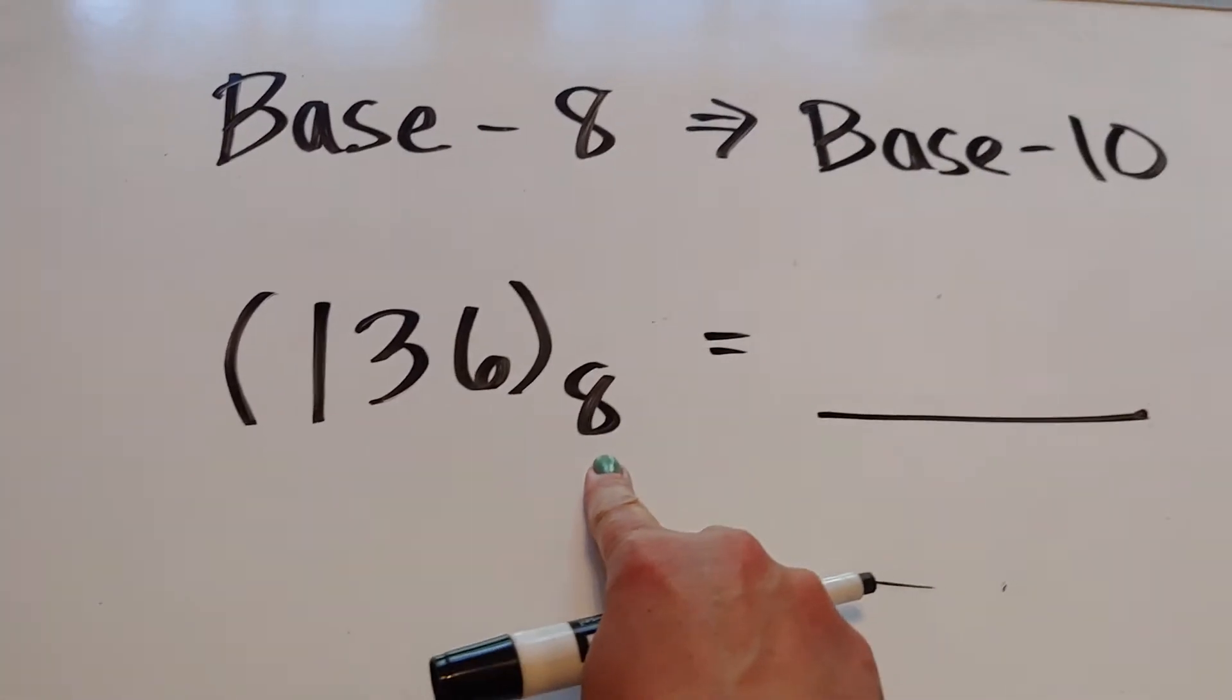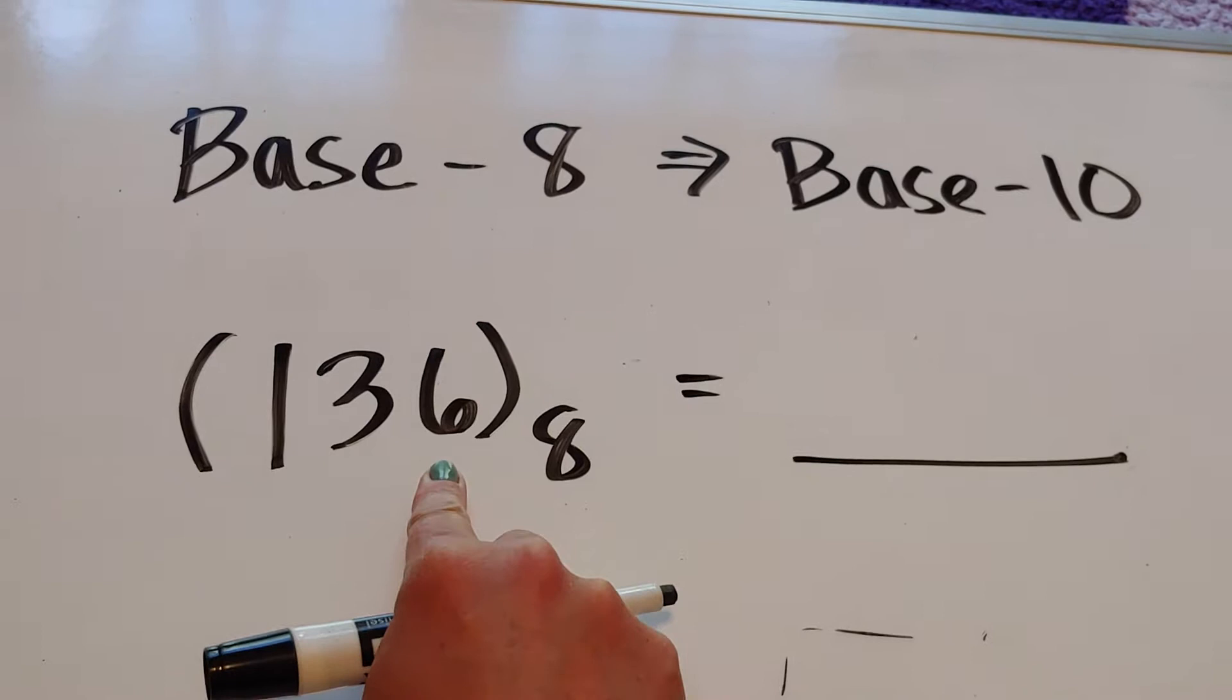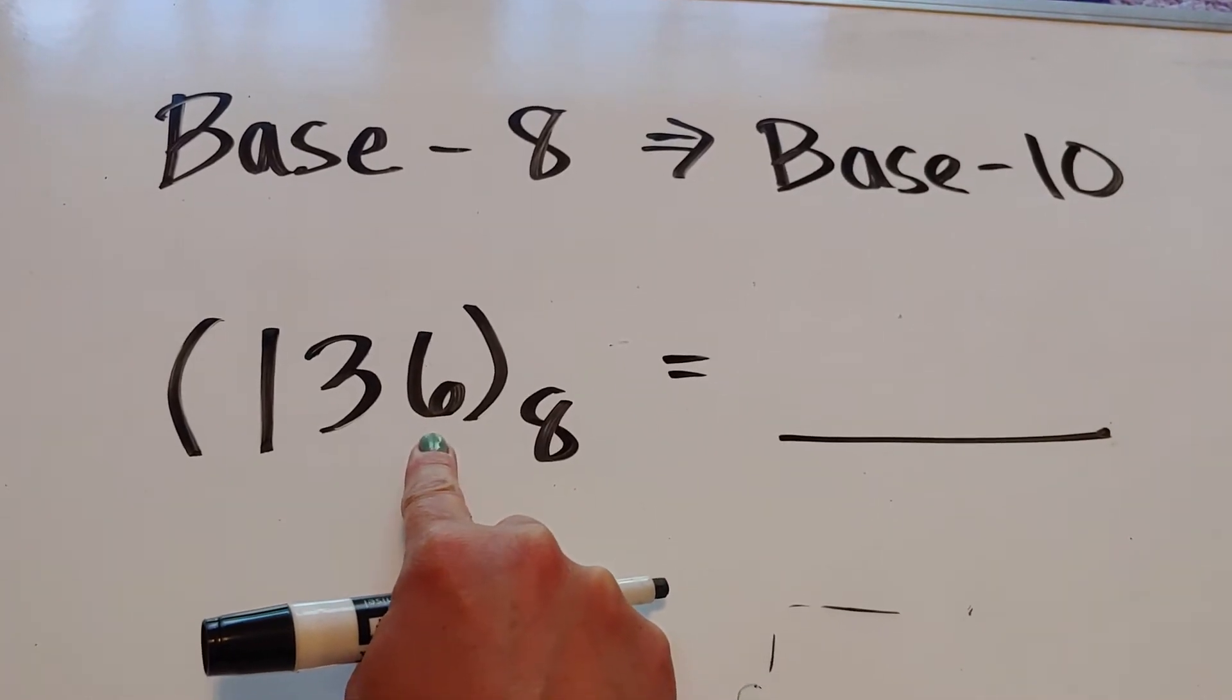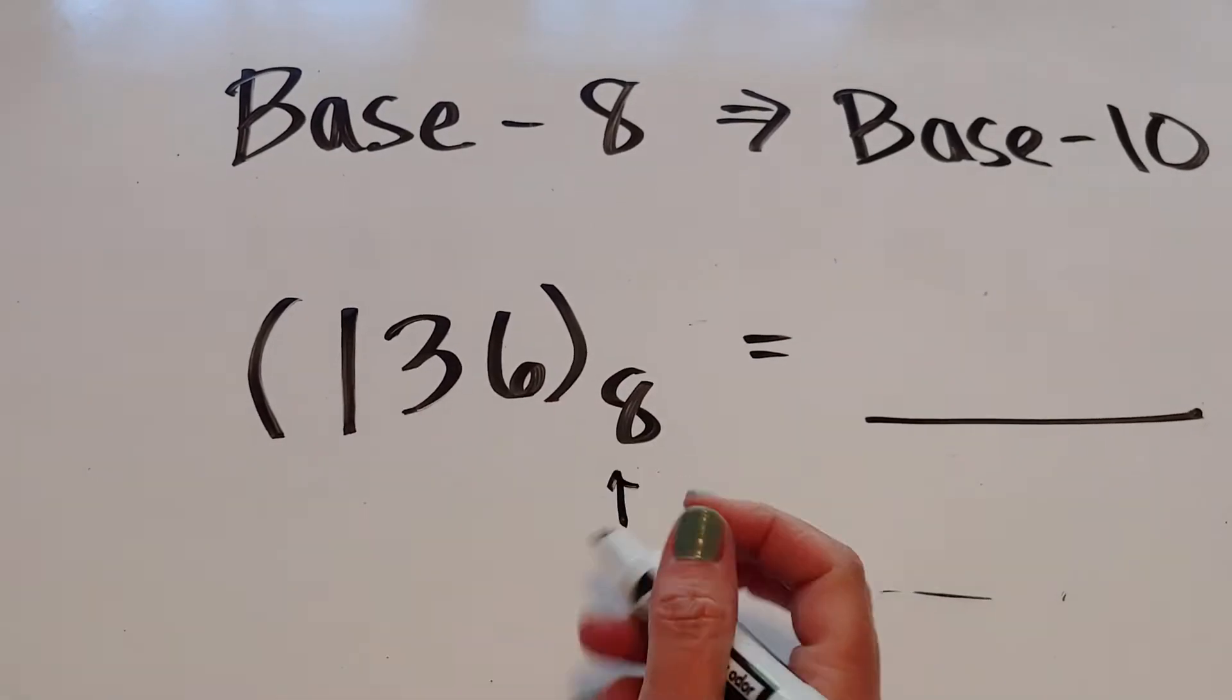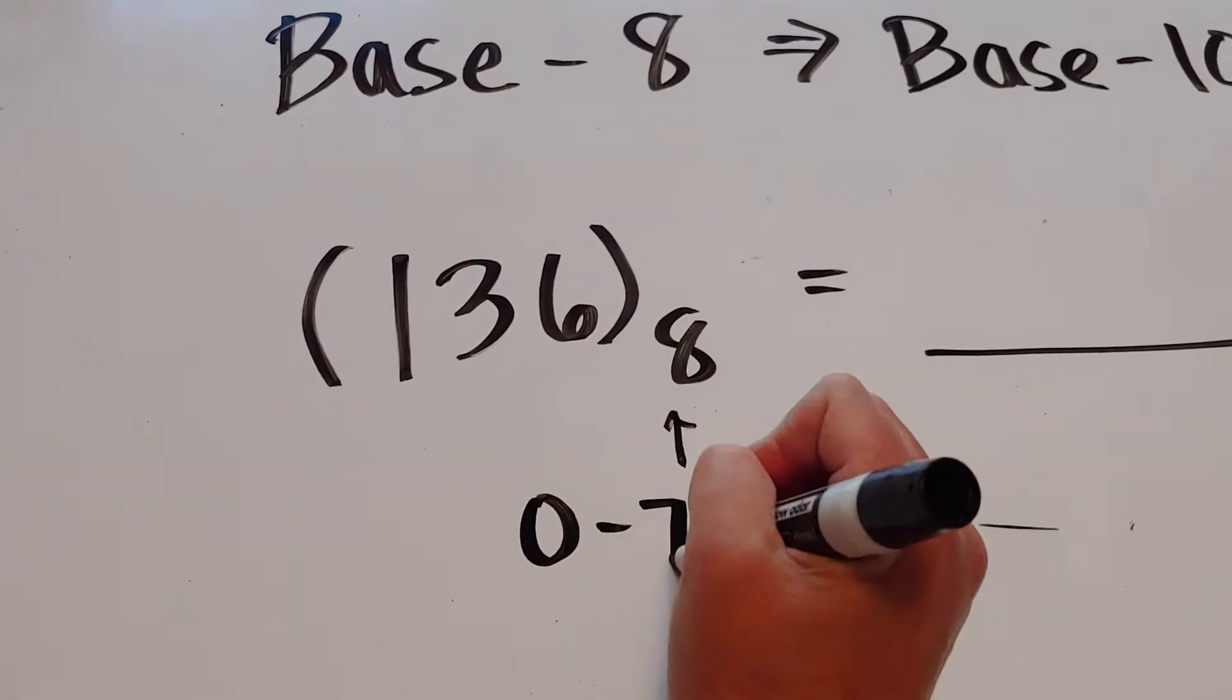A couple of fun facts. Some of you may see that 6, and after watching the base 5 video, you're like whoa, you're not allowed to use a 6. So in base 8, the digits that you can see over here are the digits 0 through 7.